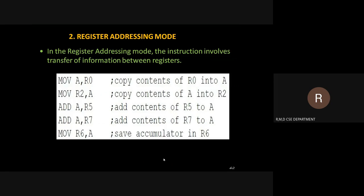The second type is called the register addressing mode. In register addressing mode, we transfer information from a register to either the accumulator or to another register. For example, MOV A, R0 — R0 is a register name. The content of R0 is going to be transferred to the accumulator. This is called register addressing mode.